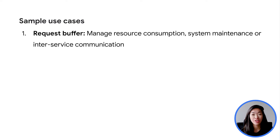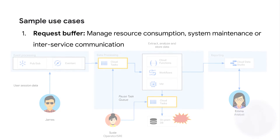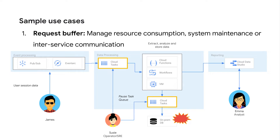Here are some scenarios you can use Cloud Tasks for — as a request buffer where you can manage resource consumption, system maintenance, or inter-service communication. This would be useful for constraining resources in terms of cost or quota limits like BigQuery slot quotas, or even on-premises databases where it doesn't scale as well. With Cloud Tasks, the queue acts as a buffer where you can pause it or queue higher priority tasks and ensure that your BigQuery writes are under the quota limits for any other data processing pipeline.